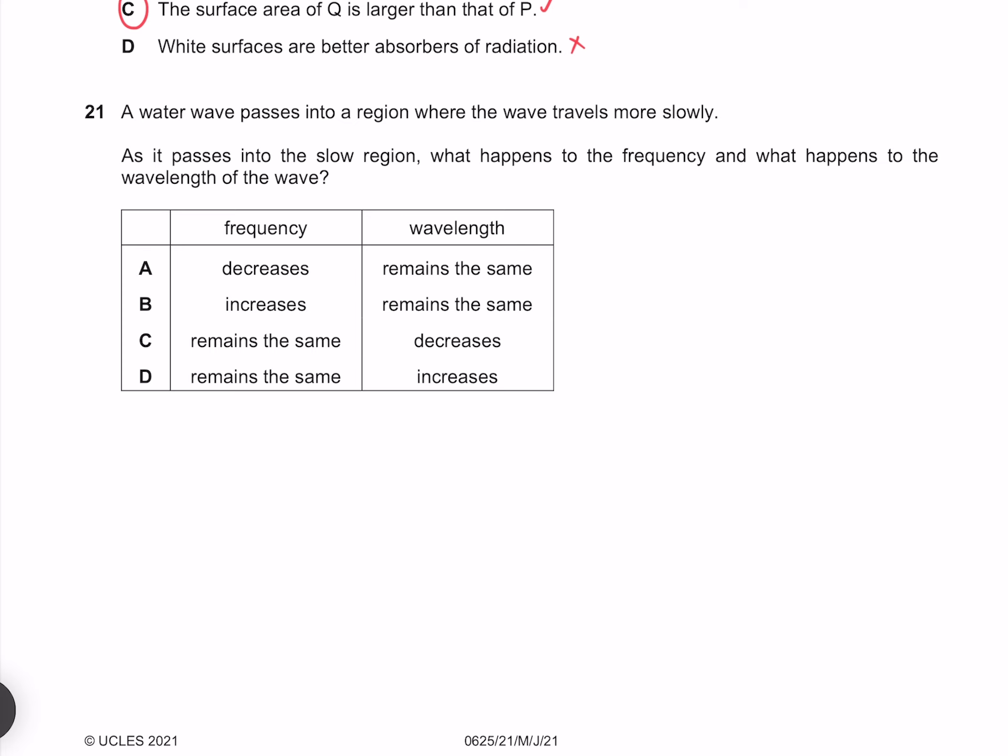A water wave passes into a region where the wave travels more slowly. As it passes into the slow region, what happens to the frequency and what happens to the wavelength of the wave? The phenomenon occurring is refraction, throughout which the frequency remains the same. Because we know that our wave speed is our frequency times wavelength and that our frequency remains the same. If we're moving into a slow region, then our wavelength must decrease. And so our answer is C.